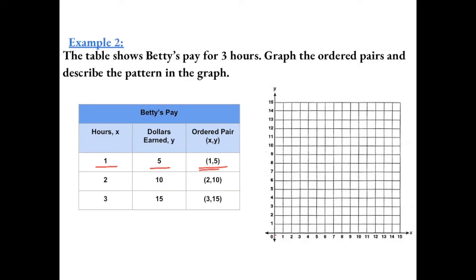We start at the origin and go 1 to the right and then 5 up. Our next ordered pair is (2, 10), so we go 2 to the right and 10 up. Then we have the ordered pair (3, 15), so we go 3 to the right and 15 up.